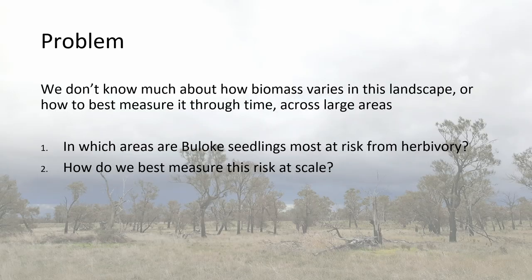So I sought to understand how much biomass varies in the landscape — where does grass grow, how much does it grow, and what influences it? The two questions I asked were: first, in which areas of this park are bull oak seedlings most at risk from browsing? And second, how do we best measure this risk at such a large scale?